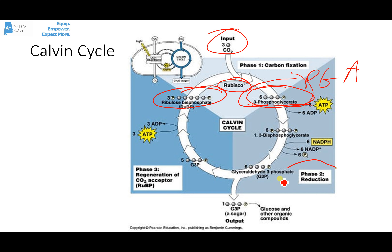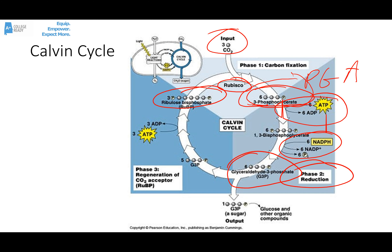Think of a PGA molecule as sort of half of a glucose, but without a lot of the energy. The next step is called reduction. During reduction, the energy from ATP and NADPH is added to the PGA. The ATP is used to phosphorylate the PGA — adding energy and phosphate groups to it. The NADPH is used to reduce the PGA — adding electrons and energy. Ultimately, we end up with three-carbon molecules called glyceraldehyde-3-phosphate, or G3P. Think of those as half of a glucose with the energy. Two of those are combined to make a glucose or other organic sugars that a plant might need.